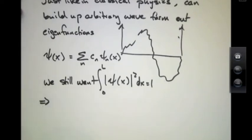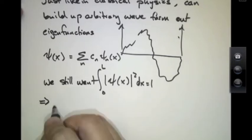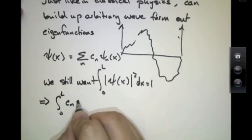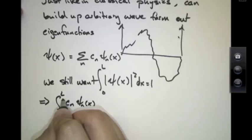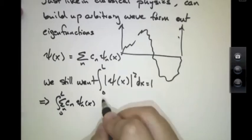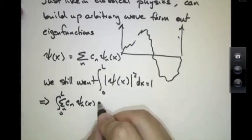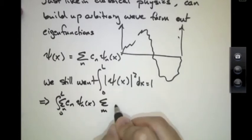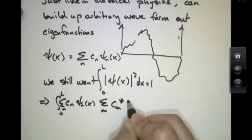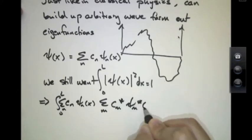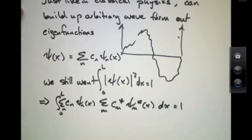And that requires some conditions on these constants cn. In other words, if I have this is true, the norm squared of Ψ integral is 1, that's the same as integrating Ψ times its complex conjugate. So here I've written Ψ, and here I've written its complex conjugate.